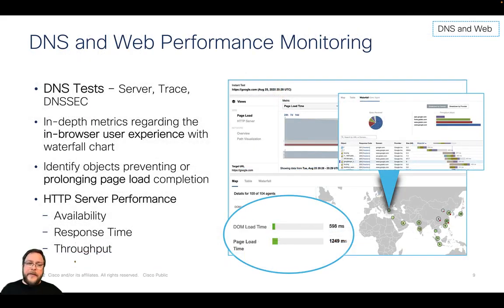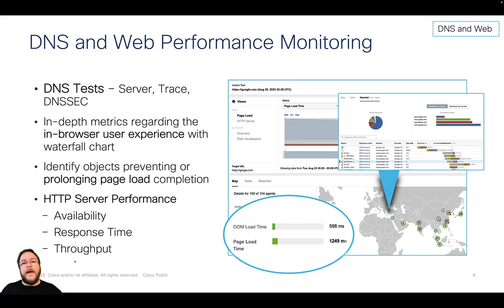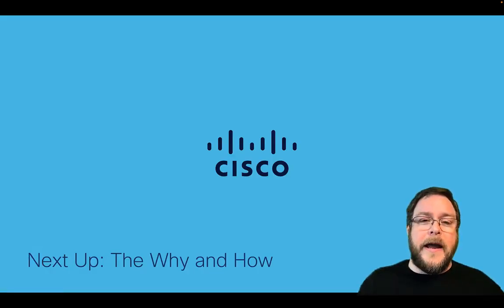One of the first things we think about is DNS — the domain name service — how we reconcile a host name or server name to a network IP address. That bears into our web performance, because if the name lookup is slow, the user will be sitting there waiting for that lookup to happen before they even get to your network and your application. So we look at availability, response time, page load time — which is indicative of how complex your page is — and then the throughput, or how fast the network is able to get your web page generated across the network to the user. In the next section, we're going to talk about the why and the how, so stand by.